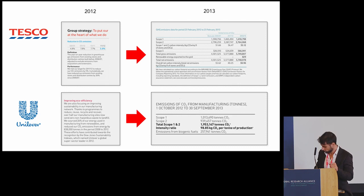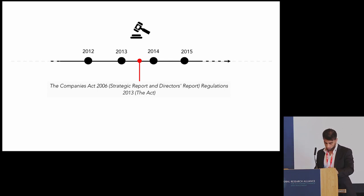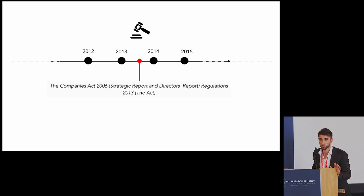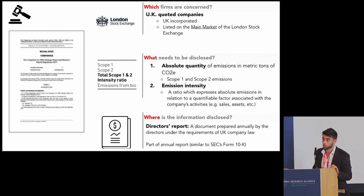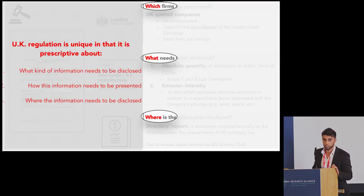What happened? The United Kingdom passed a law called the Companies Act 2006 Regulations 2013, which I'll simply call 'the regulation.' This regulation mandates firms listed on the main market of the London Stock Exchange to disclose scope one and scope two emissions, as well as emissions intensity. Importantly, this carbon emissions information must be disclosed in the financial reports. At this date, this regulation is quite unique in that it is very prescriptive about what kind of information and where the information needs to be disclosed.